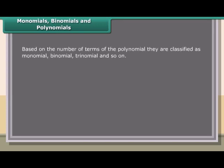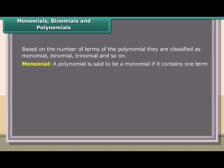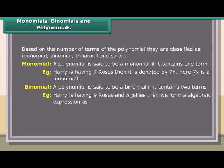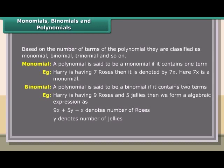Based on the number of terms, polynomials are classified as monomial, binomial, trinomial, and so on. Monomial: A polynomial with one term. Example: Harry has 7 roses, denoted 7x — so 7x is a monomial. Binomial: A polynomial with two terms. Example: Harry has 9 roses and 5 jellies, expressed as 9x + 5y, where x denotes roses and y denotes jellies. 9x + 5y is a binomial.